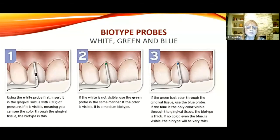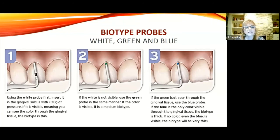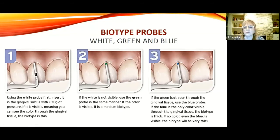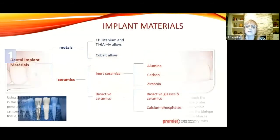There are also biotype probes—Euphredi makes these and they're designed for evaluating the thin or thick nature of the gingiva. If you use a white probe first and insert it in the sulcus and it's visible through the tissue, the tissue is thin. If you use the green probe, it's kind of moderate or medium thickness. The blue probe indicates thicker tissue. The different colors allow you to determine thickness or thinness of that gingiva if it warrants a procedure.